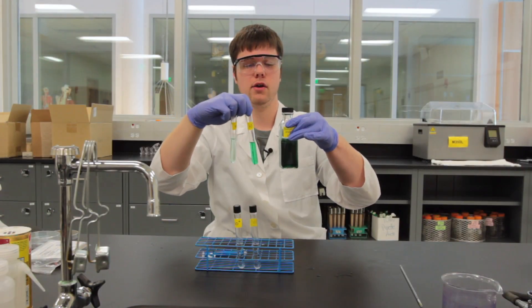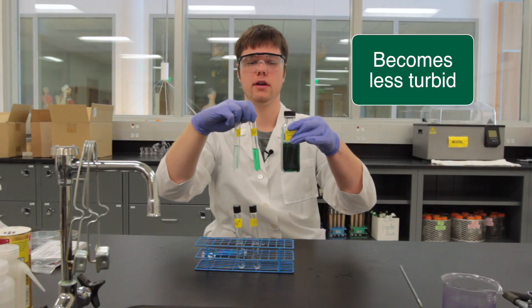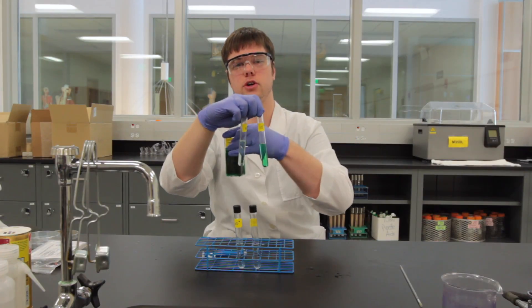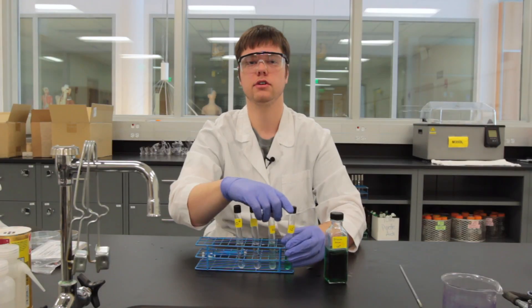For bacteria, we're diluting the bacteria and it's becoming less and less turbid. So if you've got a dark solution or a very turbid solution going to a less turbid solution, it means that you more than likely completed your dilution series correctly.